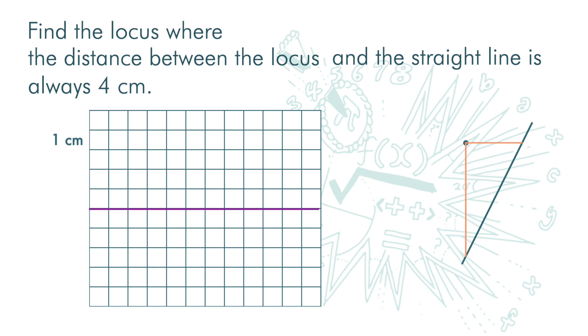Nope, it is this line that is perpendicular to the slanting line. This is the distance between the point and the line.